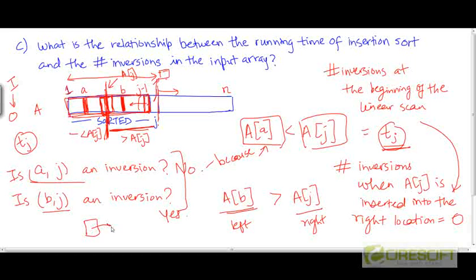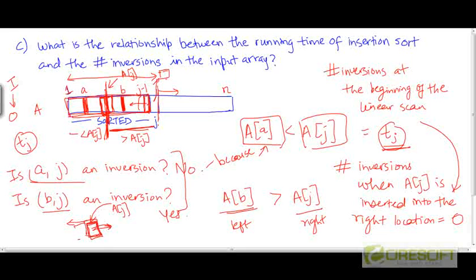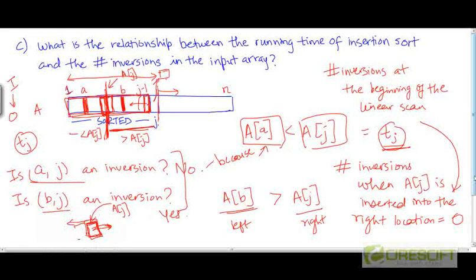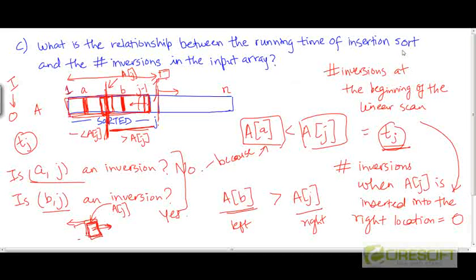Every time a comparison and shift operation is executed, an inversion that existed earlier is conceptually destroyed. Before scanning an element, there was an inversion between that element and the jth element. Once the element is shifted to the right, that inversion is destroyed because the jth element will go to the left of that element. So the running time of insertion sort — the number of steps it executes — is equal to the number of inversions that existed in the input array.